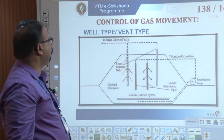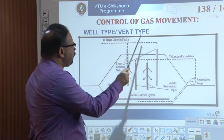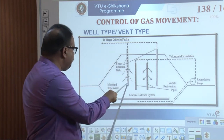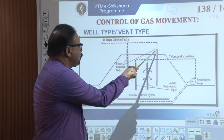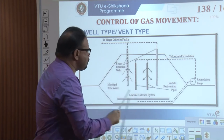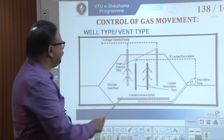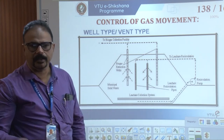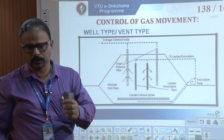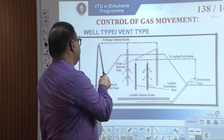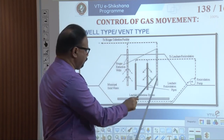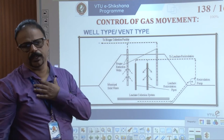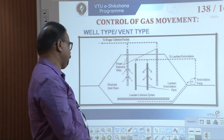There are two types of gas control: one is the vent type or well type, and the other is the barrier type. In the vent type, you can see the gas collection — vented pipes with holes. Gas developed by the reaction is collected here. This is the dump yard; the leachate collection system is also shown. These gases are taken out through perforated pipes. All the gas moves here and is taken out — this is one type of controlling gas movement.